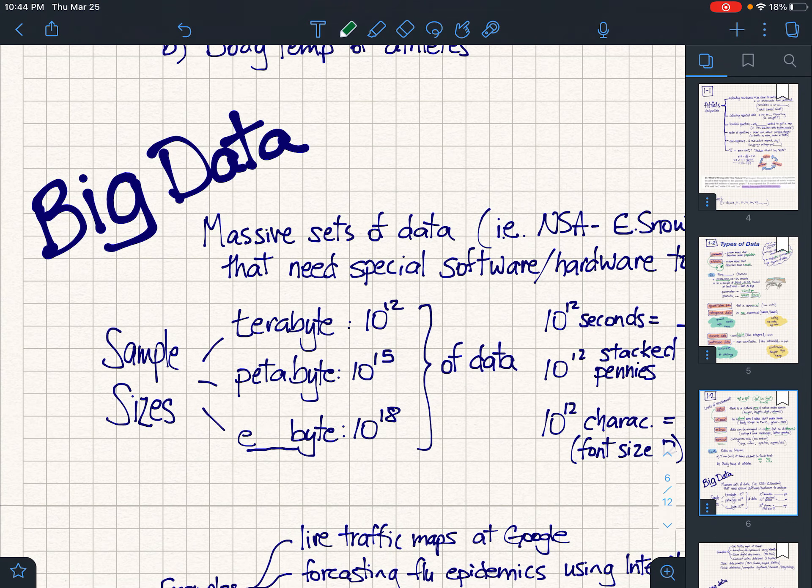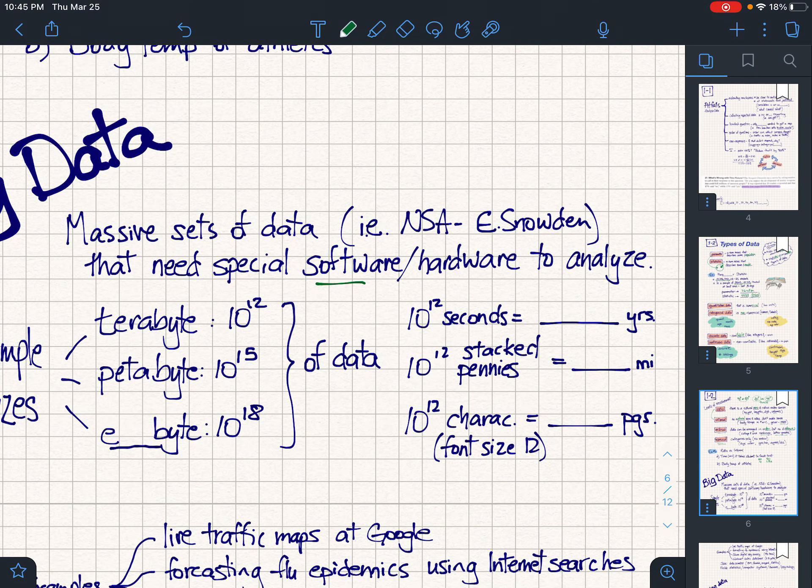Two big ideas here. First, big data. Most of the time your data items will be much smaller than this. You need to have special software, special hardware to work with a terabyte of data or a petabyte or an exabyte. These are kind of used in the news frequently, so these are things that you should be familiar with.